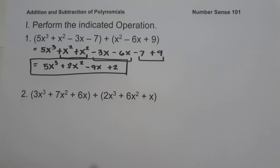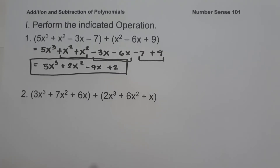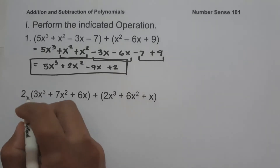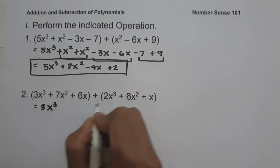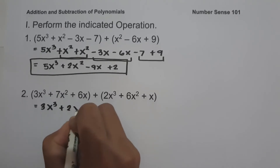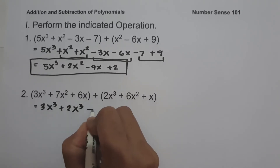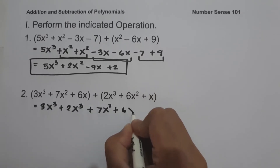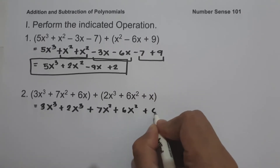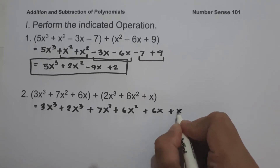On example number 2, we have the quantity 3x cubed plus 7x squared plus 6x, plus the quantity 2x cubed plus 6x squared plus x. So let us have 3x cubed, then 2x cubed, plus 7x squared plus 6x squared, plus 6x plus x.